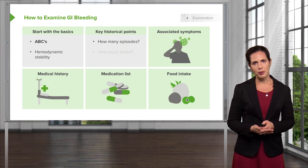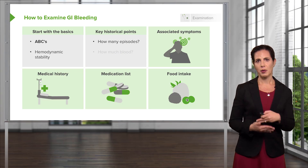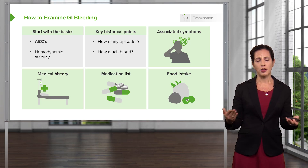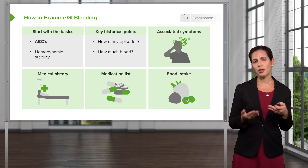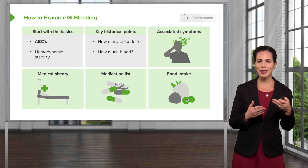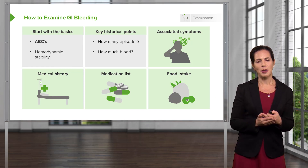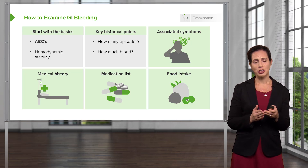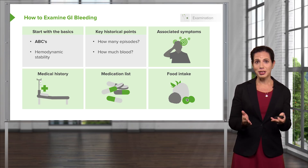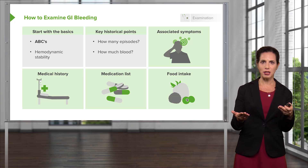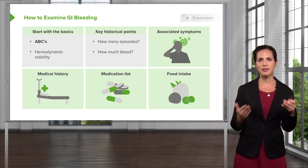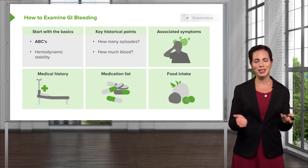You want to ask key historical points: how many episodes have they had, and how much blood was present? Did they vomit a large bowl full of blood or just a small fleck? That really makes a difference. Patients can sometimes exaggerate or underestimate the amount, so trying to get an idea of how much blood there was is important. Smartphones have actually made a difference here — if a patient brings in a picture of what they vomited or what was in the toilet, that's very helpful in the emergency department.